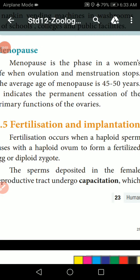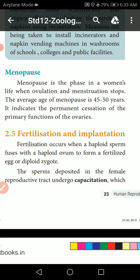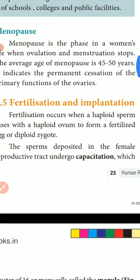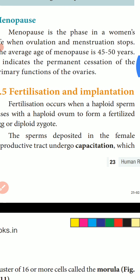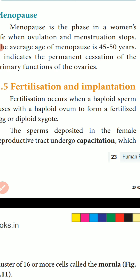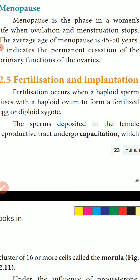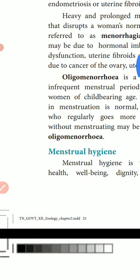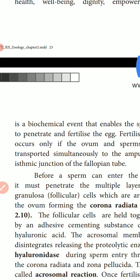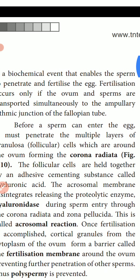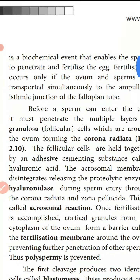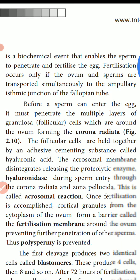This is Twelfth Zoology Chapter 2 Part 9, on Fertilization and Implantation. Fertilization occurs when a sperm fuses with an ovum. The sperms deposited in the female reproductive tract undergo capacitation, which is a chemical event that enables the sperms to penetrate and fertilize the egg. Fertilization occurs only if the ovum and sperms are transported simultaneously to the ampullary-isthmic junction of the fallopian tube.